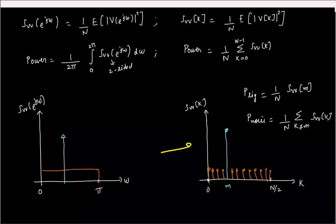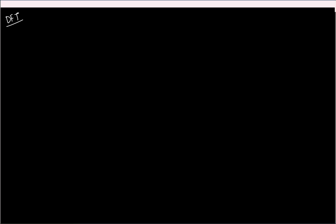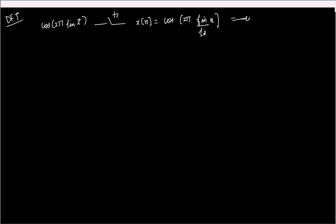Let us now see whether the DFT spectrum looks as expected, or whether there are any catches. We look at what happens when we take the DFT for both the test sinusoid and the quantization noise. If I have a sinusoid cos(2 pi f_in t) sampled at f_s, the discrete time sequence is cos(2 pi (f_in/f_s) n), which I write as cos(omega_0 n) where omega_0 = 2 pi f_in / f_s.